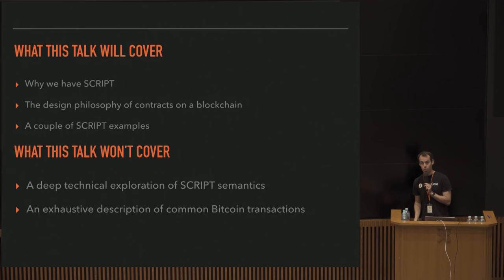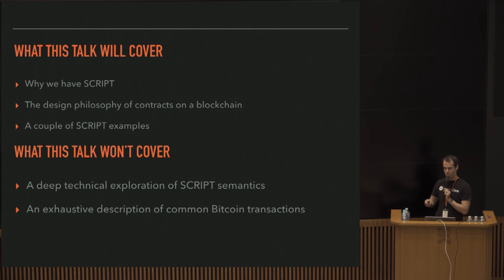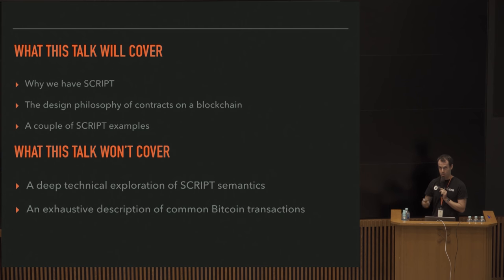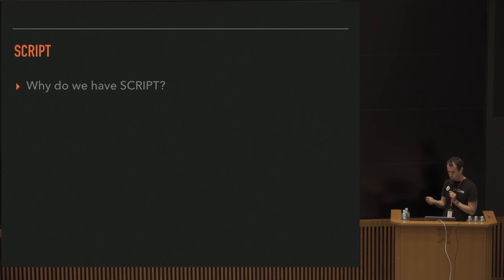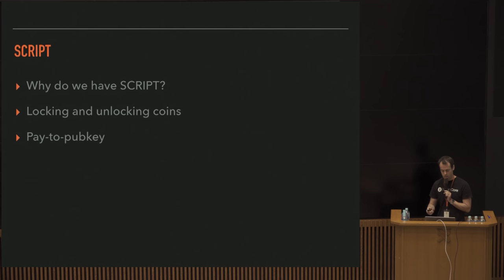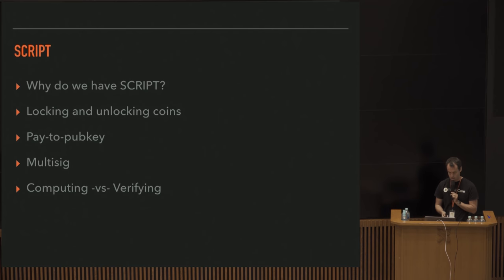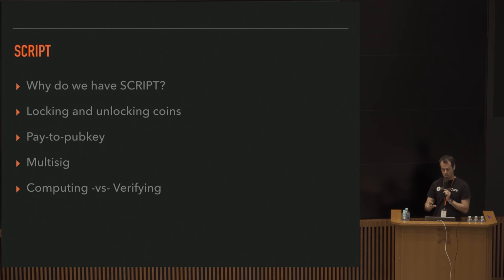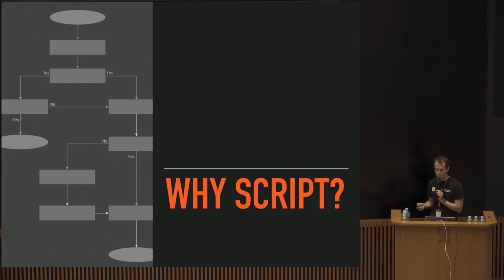What I'm not going to talk about is an exploration of the semantics of the script language, and I'm not going to give a description of all the common Bitcoin transaction output types - you can look at those in a book. I'll talk about why we have script, locking and unlocking outputs, examples of the stack for pay-to-pubkey and multi-sig, and briefly touch on the role of a blockchain in computing versus verifying.